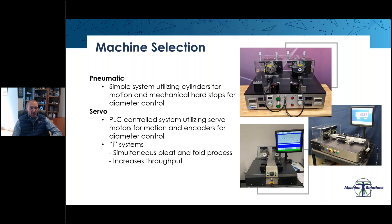On a servo controlled system, we utilize servo motors that create motion on the pleat and fold heads and encoders for diameter control. There's typically a load cell integrated into the activation system, which allows us to monitor force that the heads are applying throughout the process. Within the servo family, we also offer an eye system, which allows you to utilize the pleat and fold head simultaneously throughout the process, rather than a traditional approach of pleating and then folding. This affords the operator increased throughput because you're not waiting on one head to finish to start the next process.